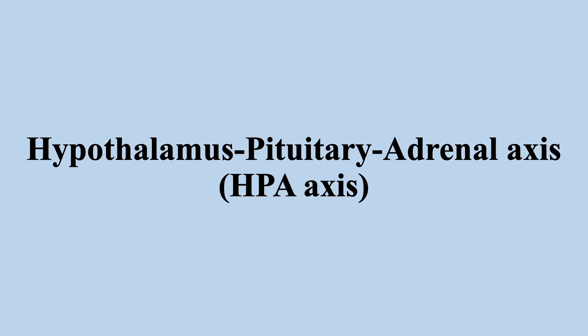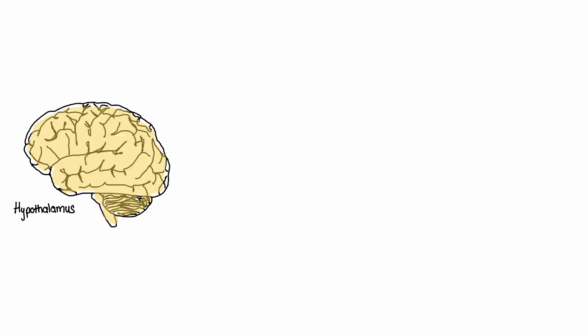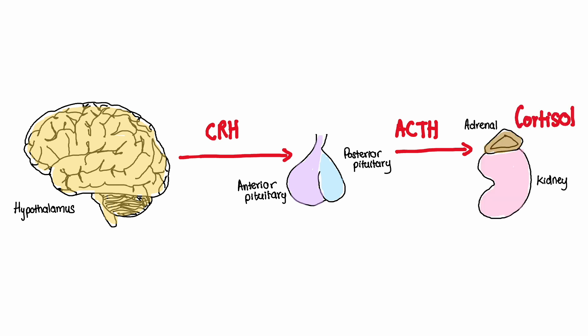One of the most well-known axes in the hypothalamus pituitary system is the hypothalamus pituitary adrenal axis, also called the HPA axis. This axis regulates the body's response to stress by releasing hormones such as cortisol. When the hypothalamus senses a stressful situation, it releases corticotropin-releasing hormone, which signals the pituitary gland to release adrenocorticotropic hormone. Adrenocorticotropic hormone travels to the adrenal glands located just above the kidneys and stimulates them to release cortisol, which helps the body respond to stress.